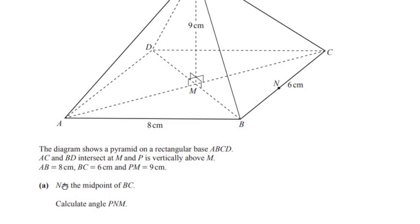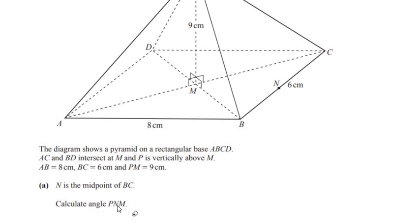N is the midpoint of BC, and since it is a midpoint it will divide the BC line into two equal halves. So we can say that BN is 3 centimeters and NC is also 3 centimeters. Calculate the angle PNM.